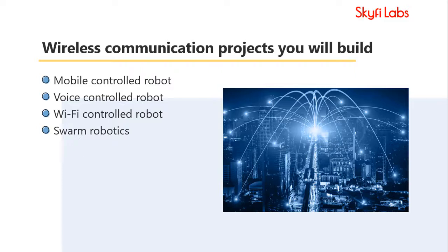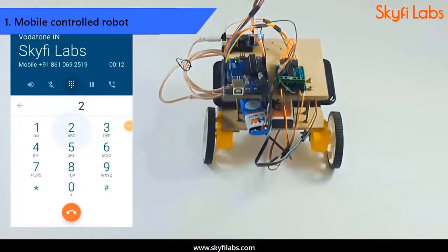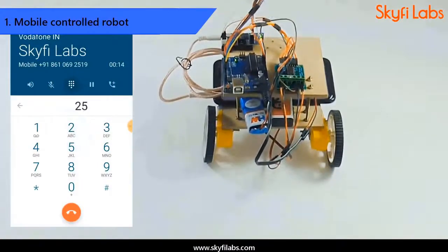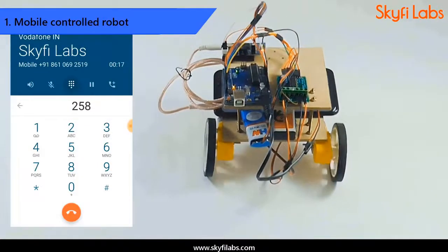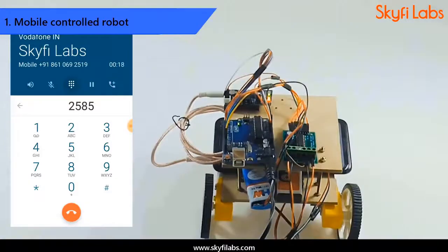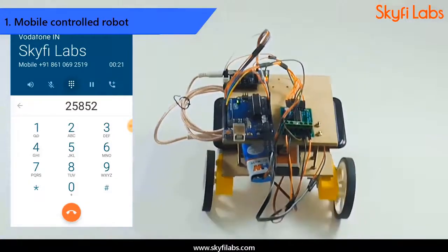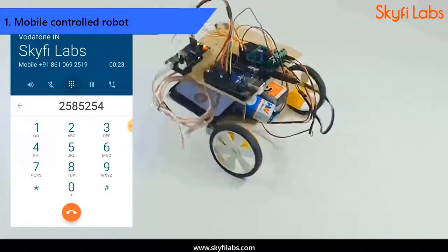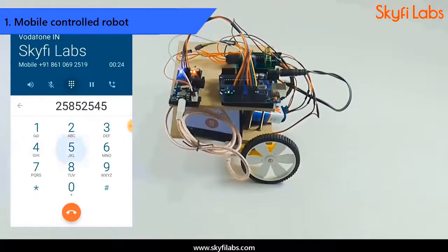The course involves you building multiple wireless communication-based projects from basics to advanced and helps you develop a good understanding of wireless communication practically. First, you will start by developing a mobile robotics project that uses DTMF communication technology to get instructions from a user's mobile phone and moves accordingly.